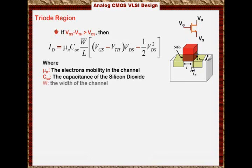W is the width of the channel, how deep the channel is, how deep the transistor is. And L is the effective length of the channel. We're going to stress that. It is the effective length of the channel.